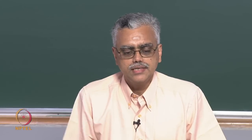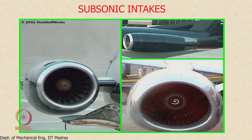Looking at typical intakes used in subsonic aircraft, you can see the divergence of the passage from the intake to the compressor inlet. These are all circular intakes. The intake in a Boeing 737 is not entirely circular — it is slightly flattened on the bottom because of the wing height from the ground. If a completely circular intake were used on this aircraft configuration during take-off or landing, it could touch the ground surface.